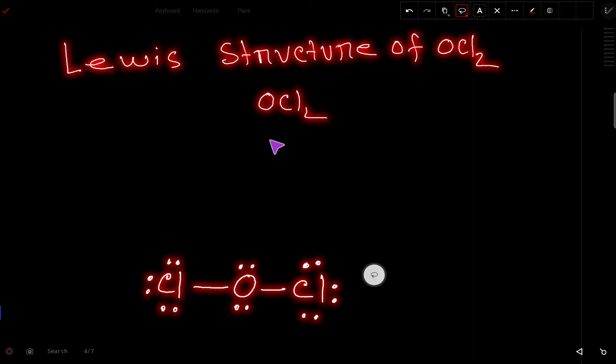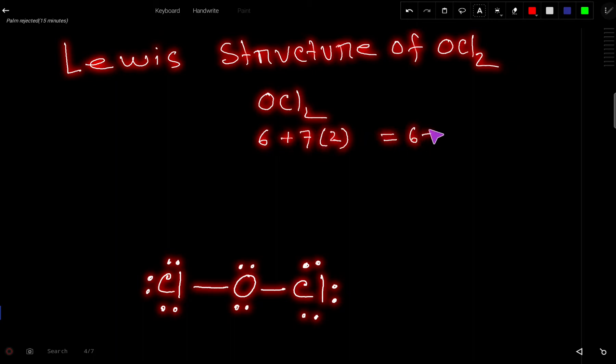Oxygen has 6 valence electrons because it is the element of group 6A. Chlorine has 7 valence electrons because it is the element of group 7A. But here we have to multiply by 2 because we have 2 atoms of chlorine. So basically we are getting 6 plus 14, that is 20 valence electrons totally.